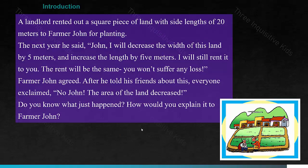A landlord rented out a square piece of land with side lengths of 20 meters to Farmer John for planting. The next year he said: John, I will decrease the width of this land by 5 meters and increase the length by 5 meters, and I'll still rent it to you. The rent will be the same — you won't suffer any loss. Farmer John agreed. After he told his friends about this, everyone exclaimed: No, John, the area of the land decreased! Do you know what just happened? He had a square piece of land with side length 20 meters, so 20 times 20 equals 400.